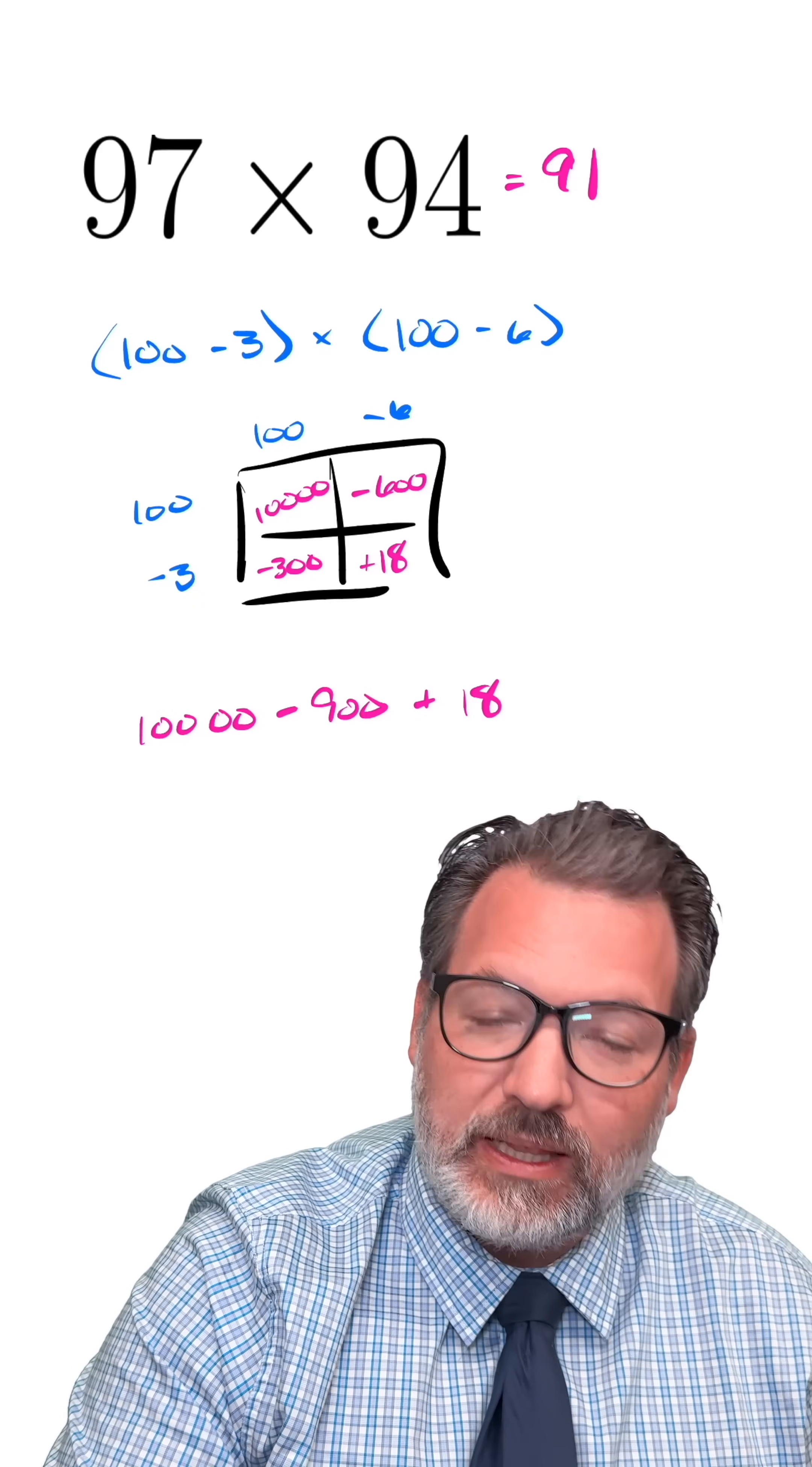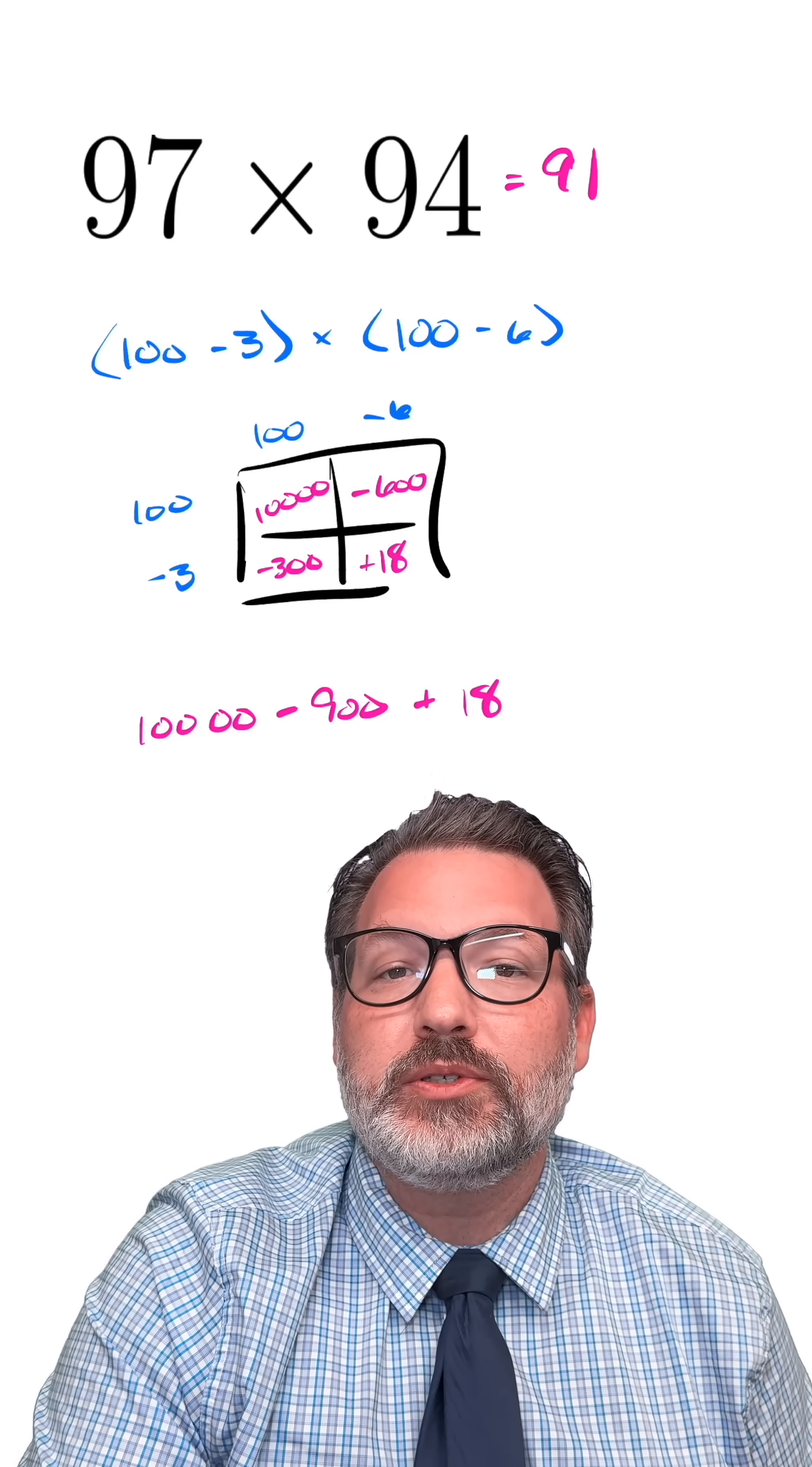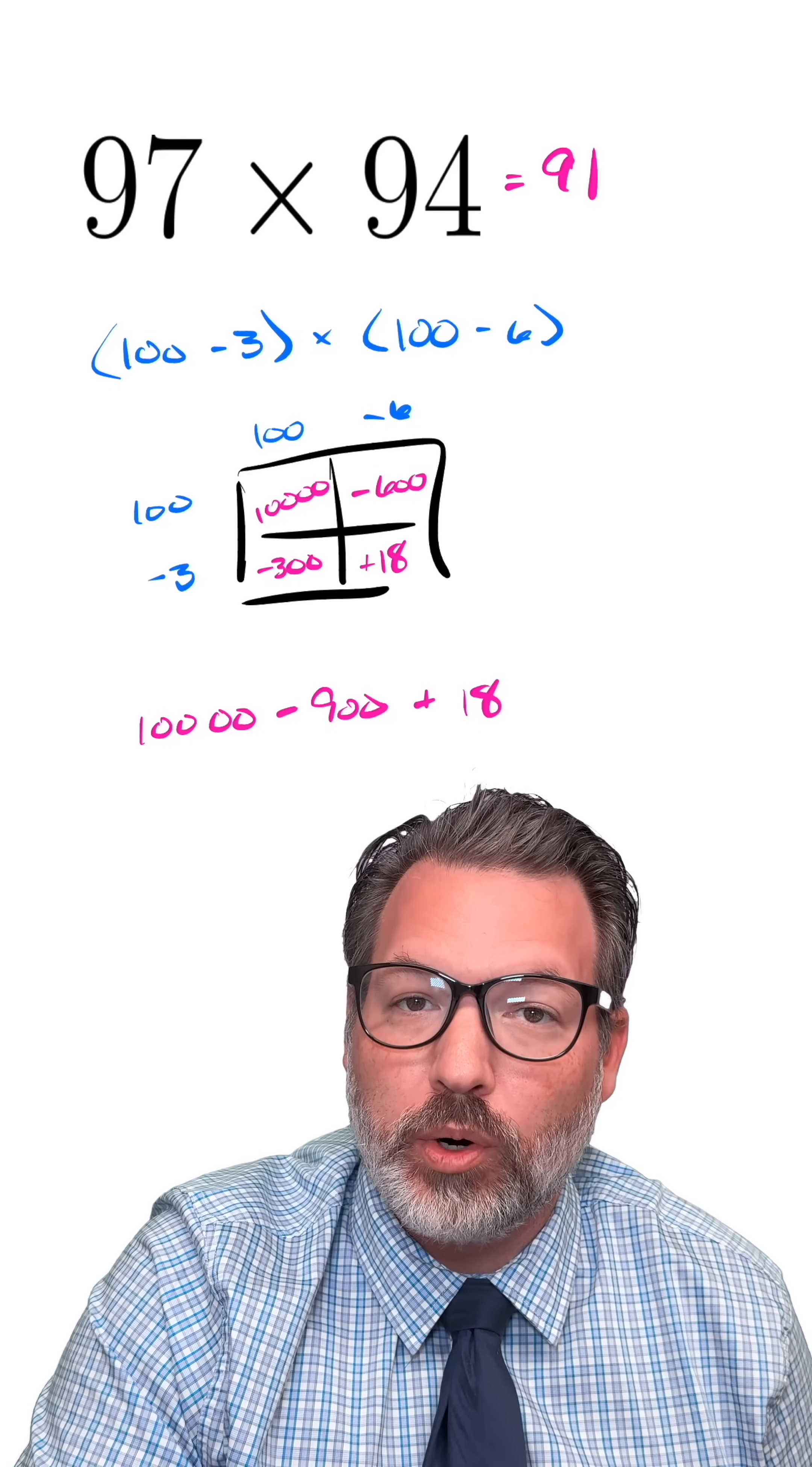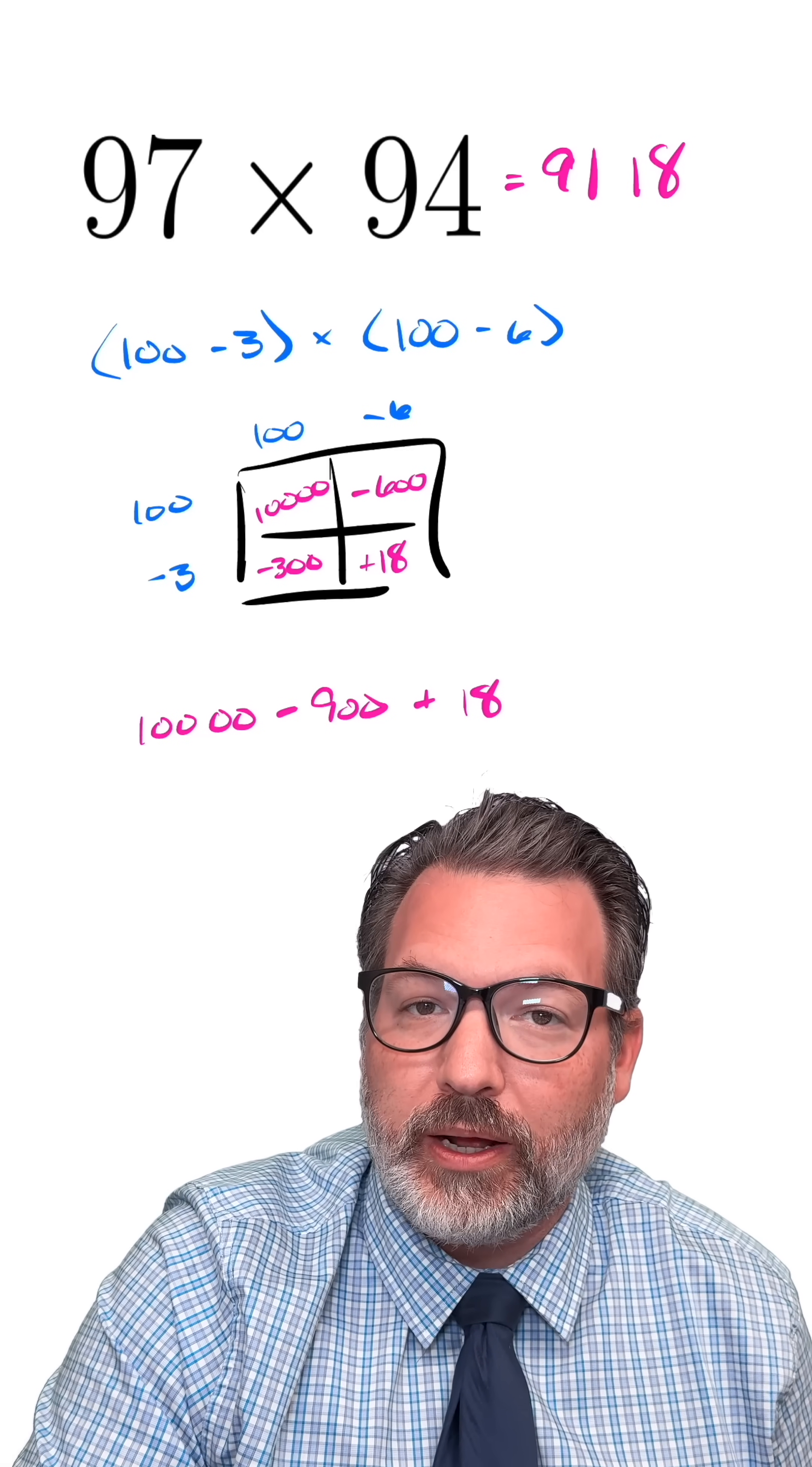And then finally, the only thing that's left for these final two digits is whatever the product is between those two values for how far away from 100 each of the numbers were. 6 times 3 again was 18, and that is the final two digits of the product here.